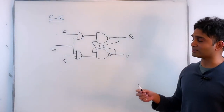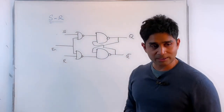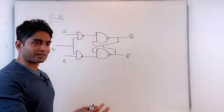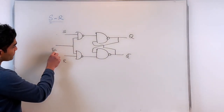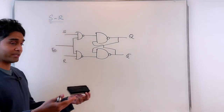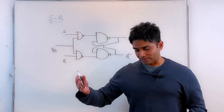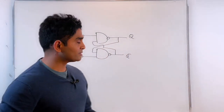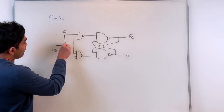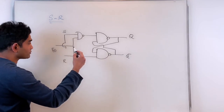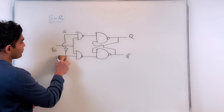The forbidden state occurs when S and R are both equal to 1. S and R equal to 0 is the memory state, and when enable is 0 that also constitutes a memory state. Since we have two memory states and really only need one, I can let go of the condition where S equal R equal to 0, which is still fine because I still have one memory state to work with.